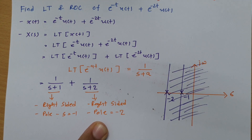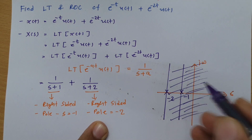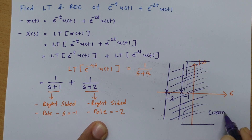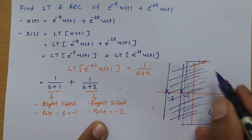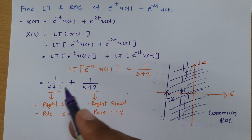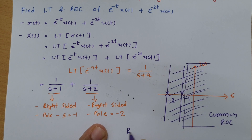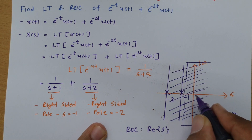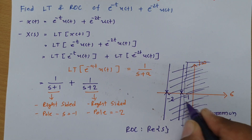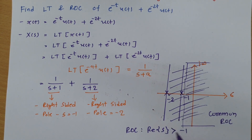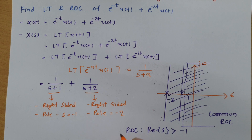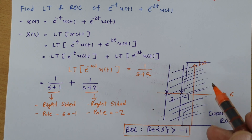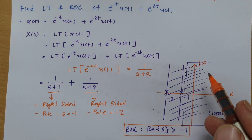The common ROC for the combined signal is the intersection of both individual ROCs, which lies to the right of the rightmost pole. Therefore the combined ROC is Re(s) > -1.